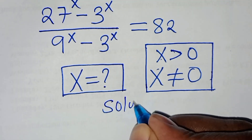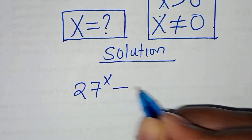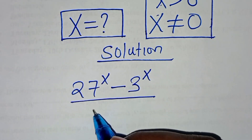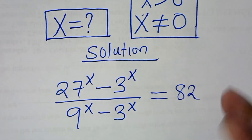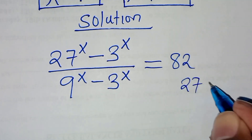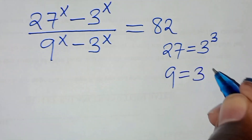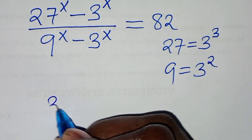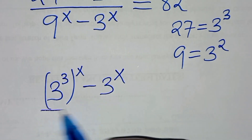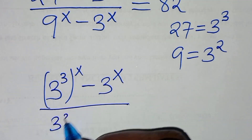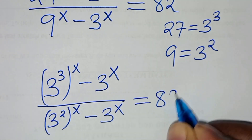Let's present a solution. We have 27 raised to the power of x minus 3 raised to the power of x, divided by 9 to the power of x minus 3 to the power of x, equal to 82. We can express 27 as 3 to the power of 3, and 9 as 3 to the power of 2. Substituting, we get 3 to the power of 3, raised to the power of x, minus 3 to the power of x, divided by 3 to the power of 2 raised to the power of x, minus 3 to the power of x, equal to 82.